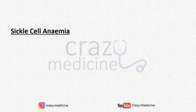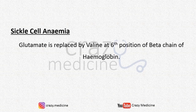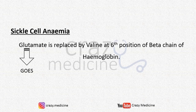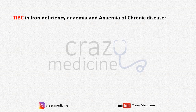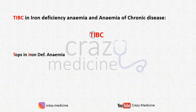Next is sickle cell anemia. What happens in sickle cell anemia is glutamate is replaced by valine at the sixth position of the beta chain of hemoglobin. A simple trick to remember: glutamate goes — G for G — and you can remember the sixth position from sickle cell anemia. Then next is TIBC in iron deficiency anemia vs anemia of chronic disease. TIBC is total iron binding capacity. You can remember this from the name itself: TIBC tops in iron deficiency anemia and is at the bottom in anemia of chronic disease.